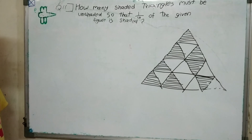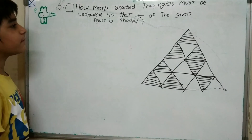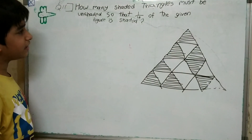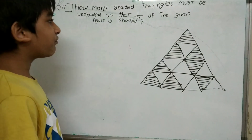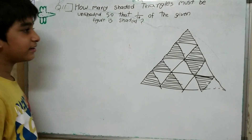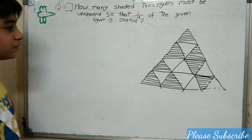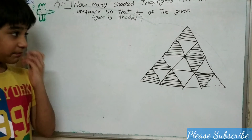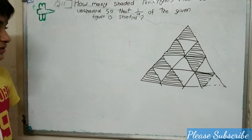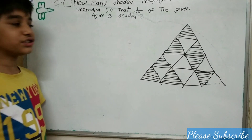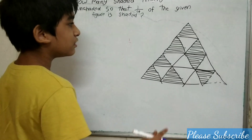This is question number 11. How many shaded triangles might be unshaded so that one fourth of the given figure is shaded? Fraction means equal portions of a whole.